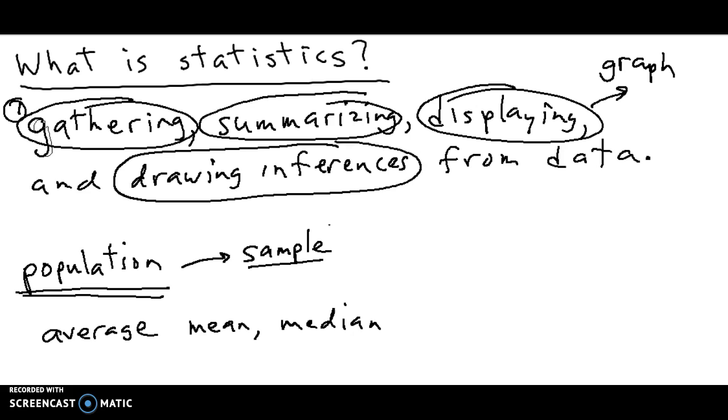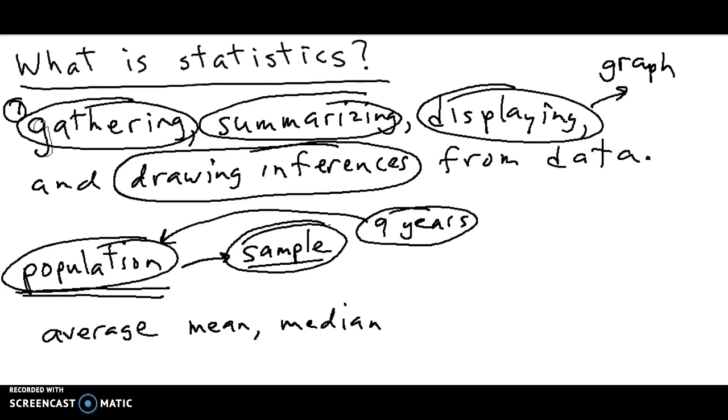And then the final part of statistics, which is the biggest part of statistics, is drawing inferences from your data. So to draw an inference, that means you have your data from a sample, and let's say that the mean lifespan of a salmon is nine years, let's say. So what does that say about your population?